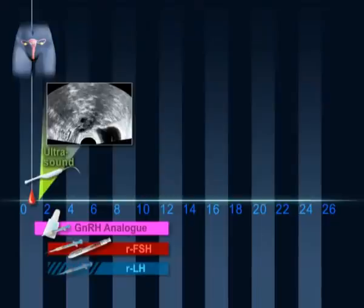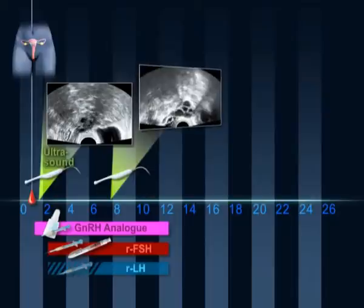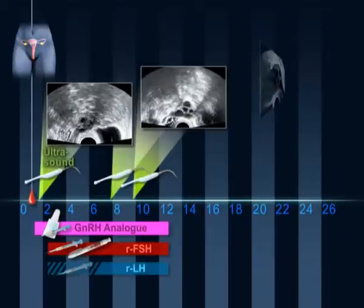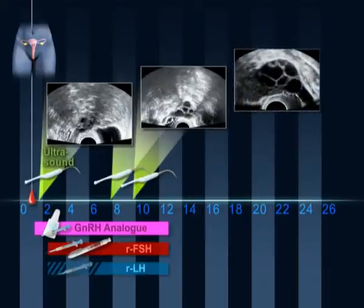At the end of approximately four to six days of stimulation, another scan is performed to check the number and size of the follicles as well as the endometrial thickness. Every two or three days, a new ultrasound scan is performed.